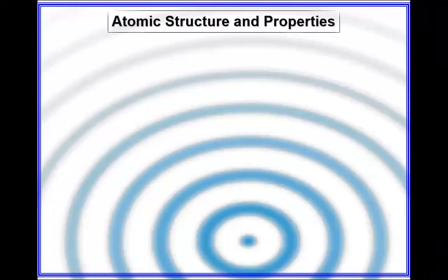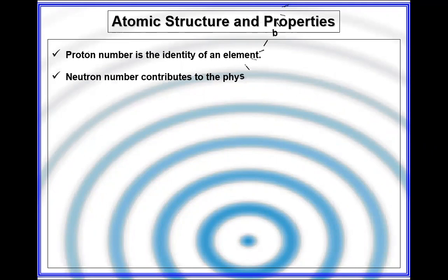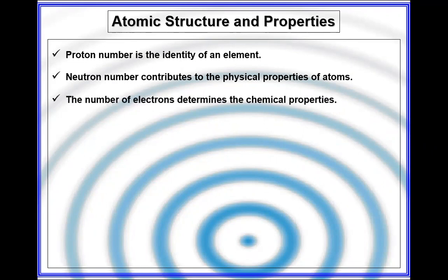Now talking about atomic structure and their properties: proton number is the identity of an element because proton number represents the atomic number. Neutron number contributes to the physical properties of atoms - isotopic formation.